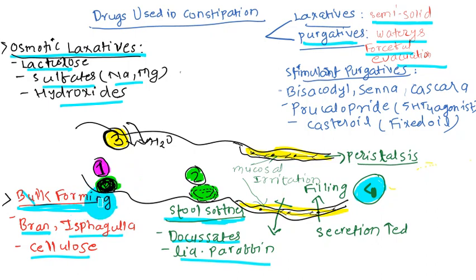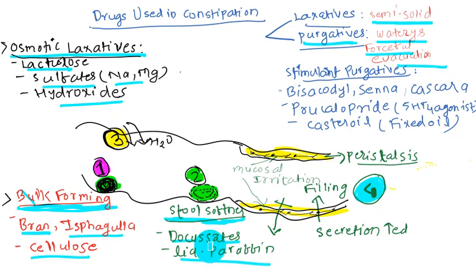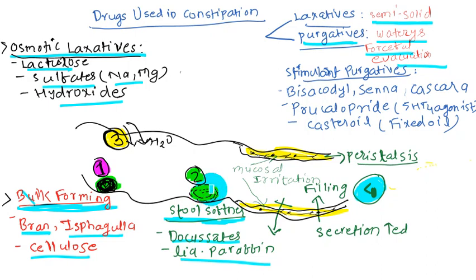The second group is stool softeners. Examples are docusate and liquid paraffin. Docusate softens the stool by emulsifying the colonic content and increasing the penetration of water into the feces. Liquid paraffin delays the absorption of water from the gut into the circulation, prolonging water contact with stool and softening it for easy evacuation.